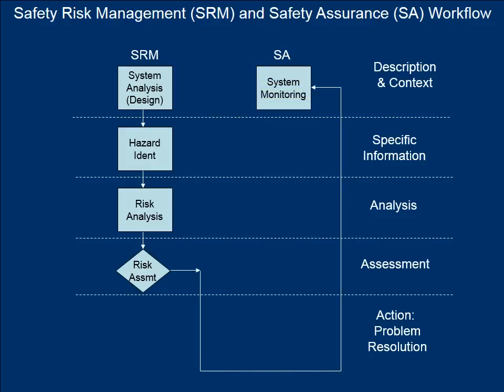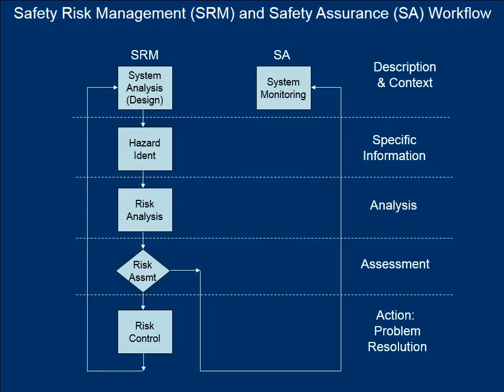If the risk assessment determines the risk level is acceptable, it is then transferred to the safety assurance side of the workflow to assure that the risk level does not change and remains acceptable. If the risk assessment determines the risk to be unacceptable, then a risk control must be designed to either eliminate or mitigate the risk to an acceptable level. This risk control is then processed back through the safety risk management system to determine if the designed risk control has met those requirements. The design loop is continued until the risk is acceptable, or until it is determined that the proposed operation cannot be allowed because the risk is too great.